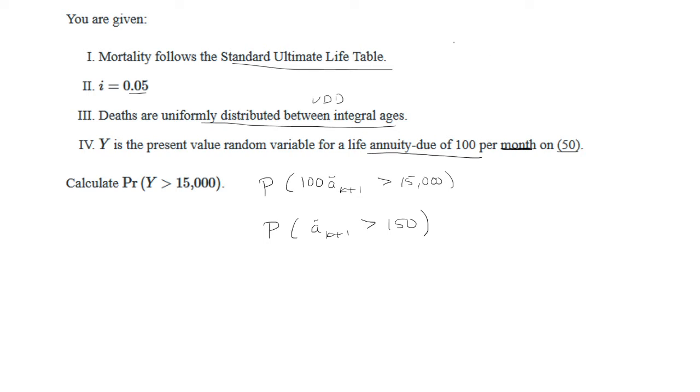So typically if this was annually we would just have 1 minus V to the K plus 1 over D. Now for monthly what changes is this V - we want to convert it to monthly so we're gonna raise this to 1 over 12 power. So it's gonna be 1 over 12 and then raise that to the K plus 1. So that represents discounting it 1 month and then D we're gonna have D uppercase 12 divided by 12.